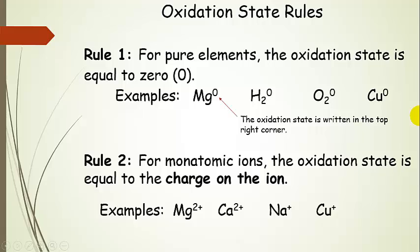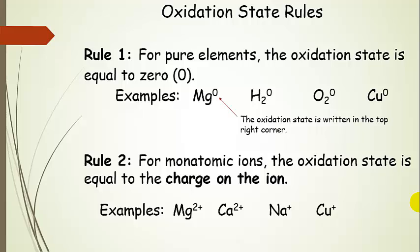For pure elements, the oxidation state is always zero — so any element on the periodic table is zero. Another easy rule is that for monatomic ions, the oxidation state is equal to the charge on the ion. In this case, it actually is real. So magnesium 2+ cation really does have an oxidation state of 2+ and a charge. Same with calcium, sodium with a +1 charge, and copper+ cation with a +1 charge. That's for monatomic ions if you see them in the reaction.